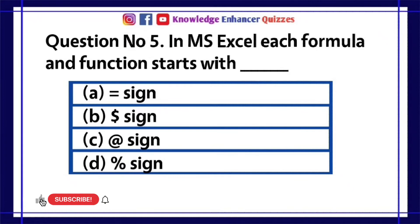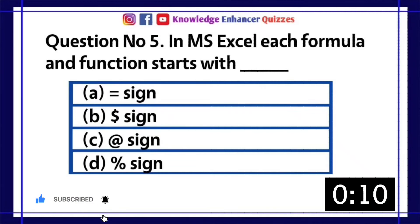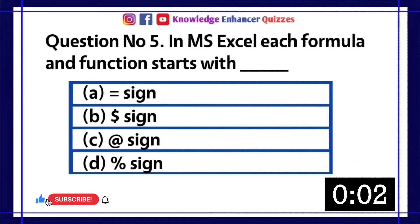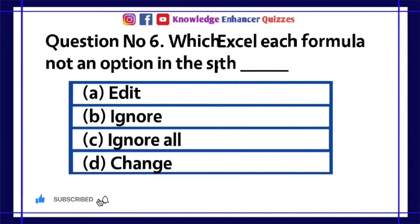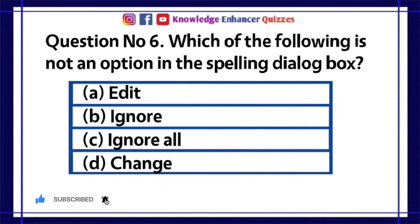Question number 5: In MS Excel, each formula and function starts with dash. A. Equals sign  B. Dollar sign  C. At the rate of sign  D. Percentage sign. Option A is the right answer.